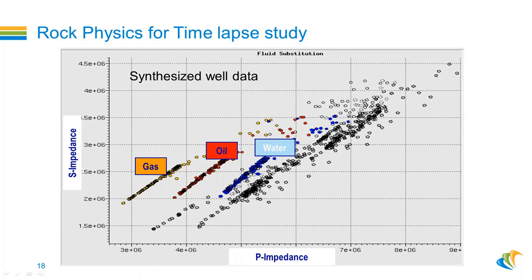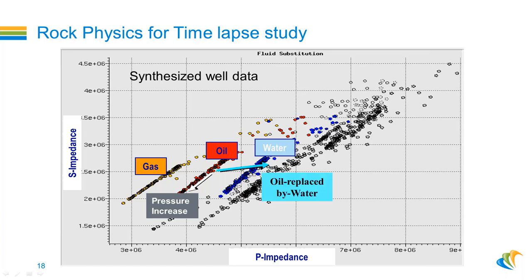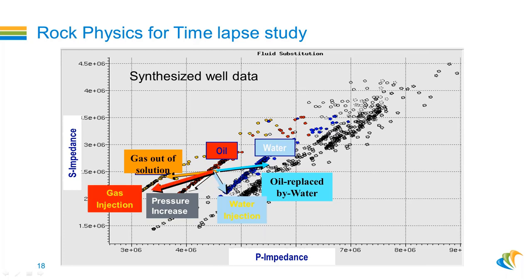Another example is time-lapse studies. We have a P-impedance vs. S-impedance cross-plot with synthesized well logs for gas, oil, and water. We know data should be in specific areas for water sand, oil sand, and gas sand. We can estimate what happens if pressure changes — data will shift accordingly — or if oil replaces water, gas comes out of solution, water injection, or gas injection occurs. We can analyze all these effects using the rock physics model we have already created.